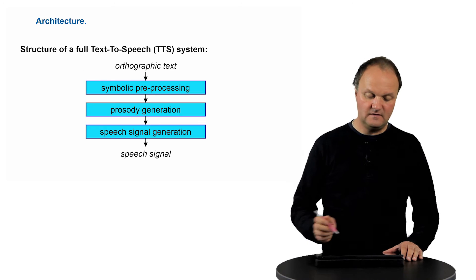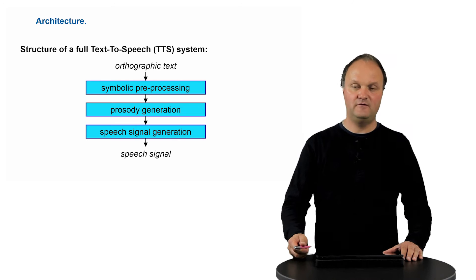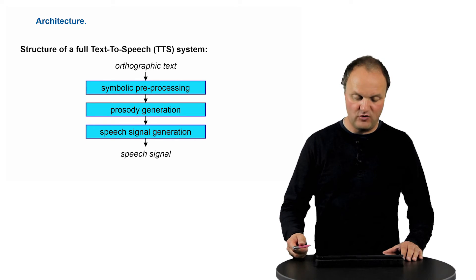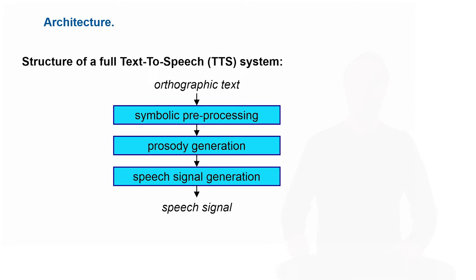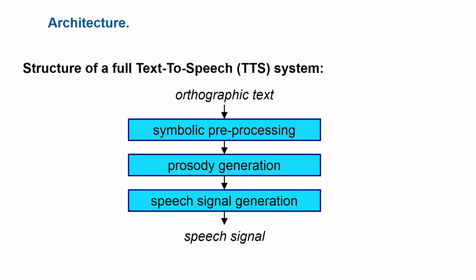In order to do synthesis from text, we have to deal with three separate problems. The first is called symbolic preprocessing, the second the prosody generation, and the third the speech signal generation.